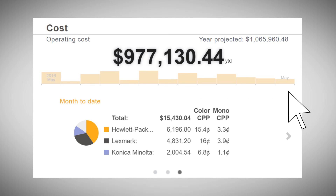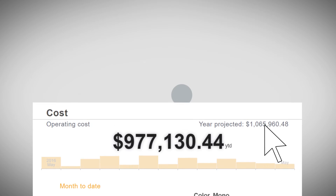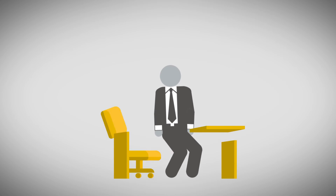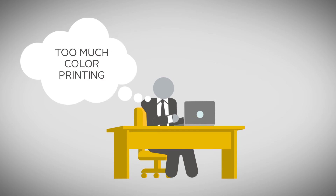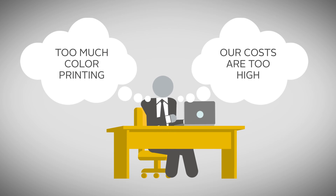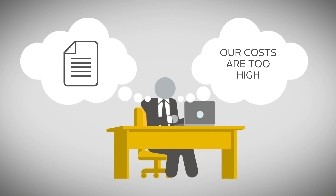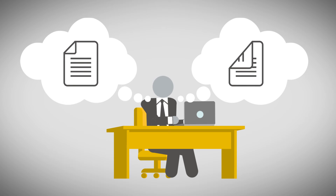If your projected cost is higher than your target budget, you can easily identify the problem and work with the relevant departments to fix it, perhaps by using monochrome and double-sided printing as default settings.